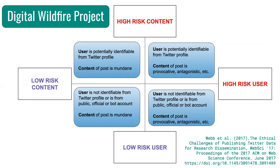Another approach to addressing harm, according to some kind of risk-benefit assessment, is illustrated by Webb et al. in their paper on the ethical challenges associated with the Digital Wildfire project. The project sought to identify opportunities for the responsible governance of digital social spaces by tracking how social media platforms such as Twitter offer the capacity for inflammatory, antagonistic, or provocative digital content to spread on a broad and rapid scale.